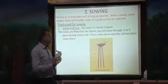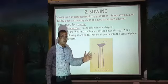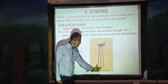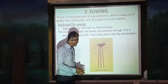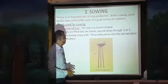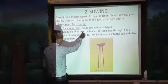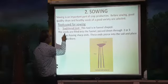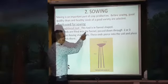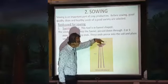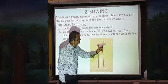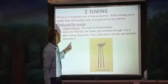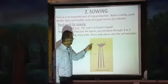What is the traditional tool? This is the traditional tool — it is a funnel shape. It has two or three pipe structures fixed to the funnel. The seeds are filled into the funnel and pass down through these pipes which have sharp ends.